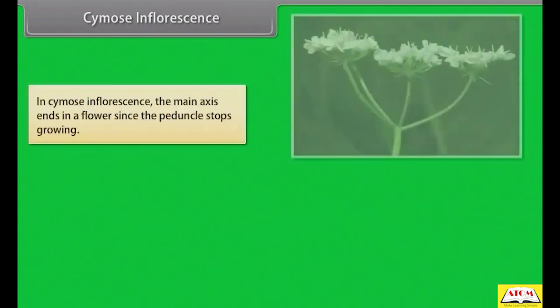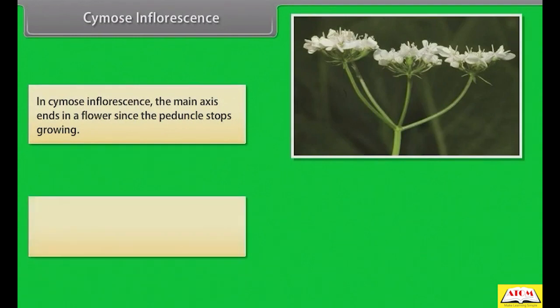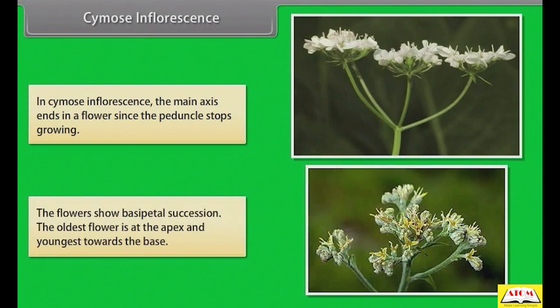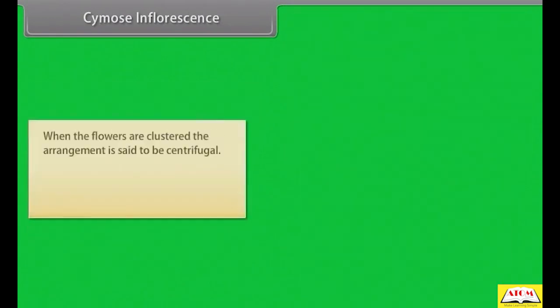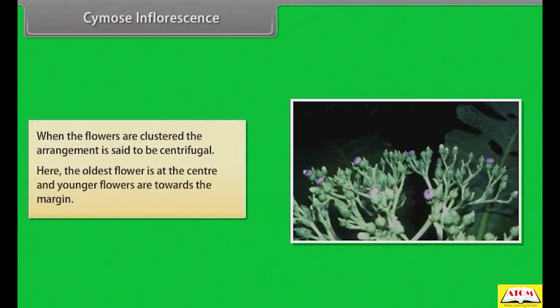In cymose inflorescence, the main axis ends in a flower since the peduncle stops growing. The flowers show basipetal succession; the oldest flower is at the apex and the youngest towards the base. When the flowers are clustered, the arrangement is said to be centrifugal — the oldest flower is at the center and younger flowers are towards the margin.